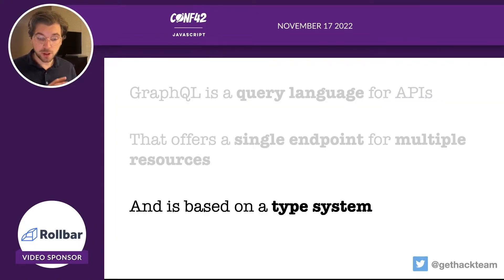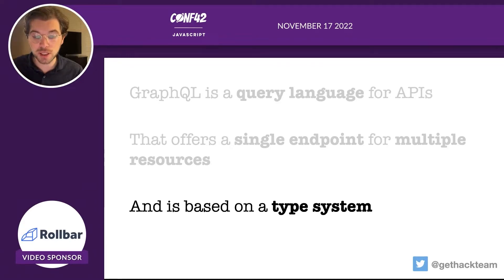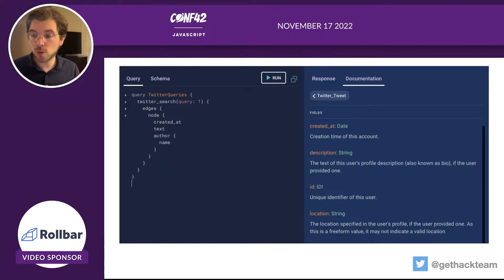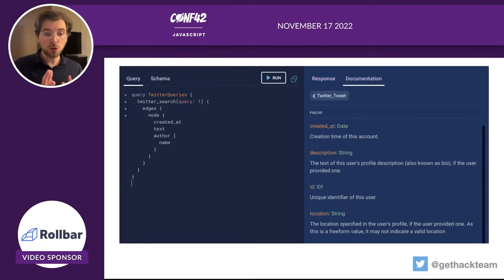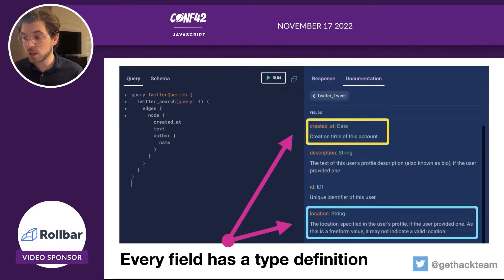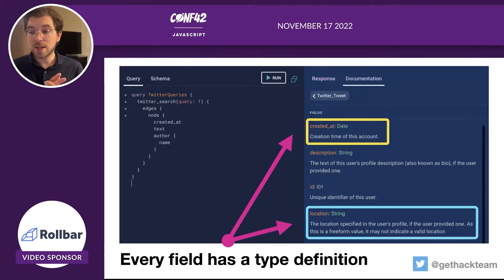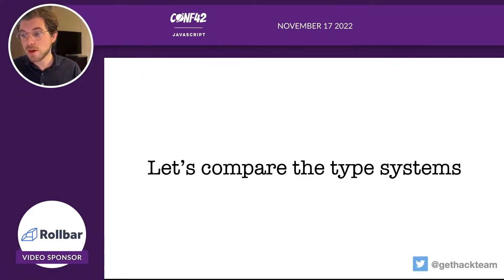Most importantly, getting back to the original topic: GraphQL is also based on a type system, just like TypeScript. In a GraphQL playground you can see a documentation panel — this is the self-documenting feature GraphQL has. GraphQL has a schema at its top that defines all the type definitions and all the queries, and this is used by playgrounds to give you a way to introspect the GraphQL API. So let's compare the two type systems — TypeScript on the left and GraphQL on the right — and they aren't that different.